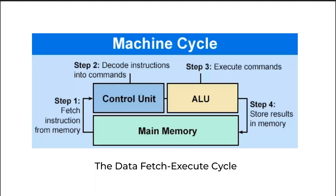We call this the machine cycle, or we can call it the fetch-execute cycle. It fetches data, executes it, saves it, then fetches more data, executes it, saves it — that's typically how the cycle goes. Now that we've spoken about how the CPU works, we should look at what parts make up the CPU.